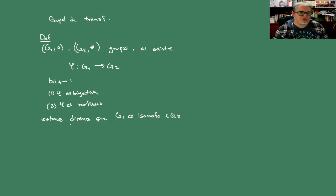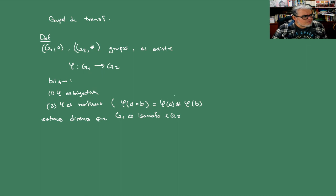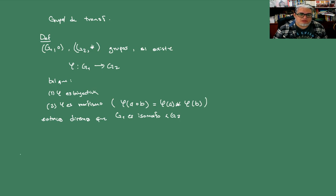Para los que no se acuerdan, un morfismo es una función que respeta estructura algebraica. Es decir, le vamos a pedir que si operamos phi de A con B en G1, esto sea igual a phi de A operado con la estrellita en G2 con phi de B. Ese es un morfismo. Formalmente tendríamos que pedir que también la inversa sea un morfismo, pero no nos preocupemos demasiado por esa parte.